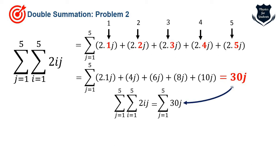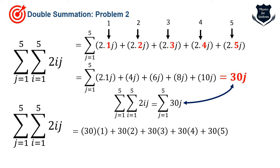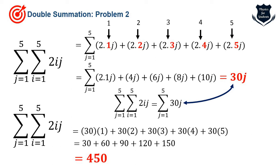Now we use 30j and solve the outer sigma j=1 to 5. Keeping 30 constant, j varies from 1 to 5, and we substitute the values. Solving gives 450. That's the double summation result — take the innermost sum, get the value, substitute into the outermost sum, get the final value. Done.